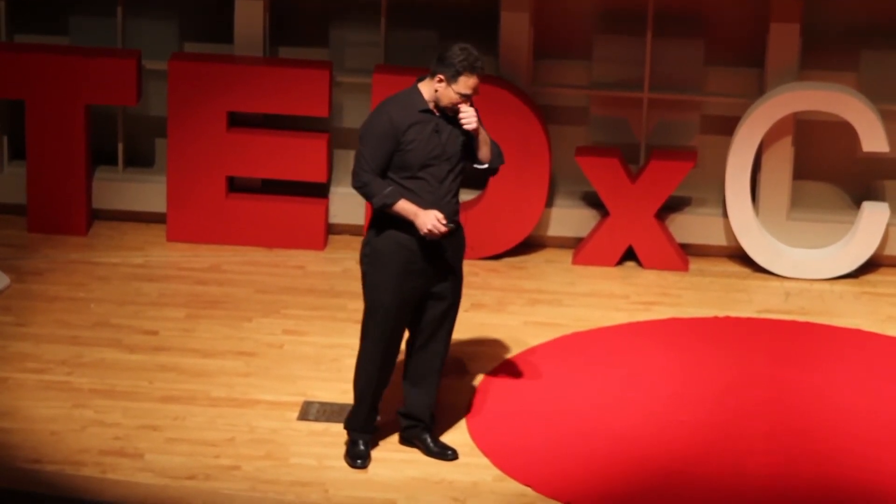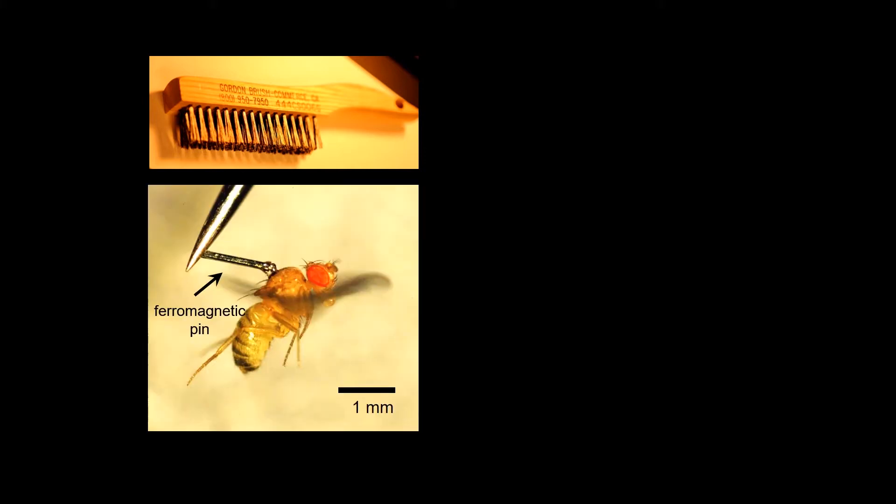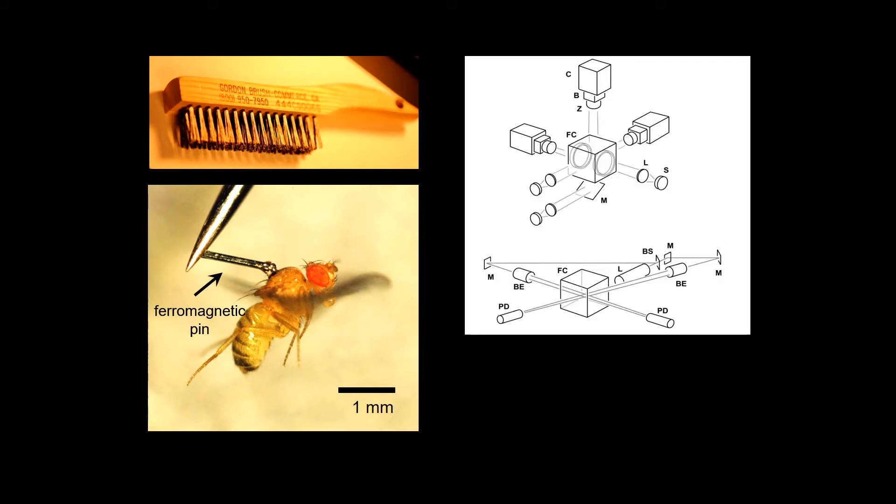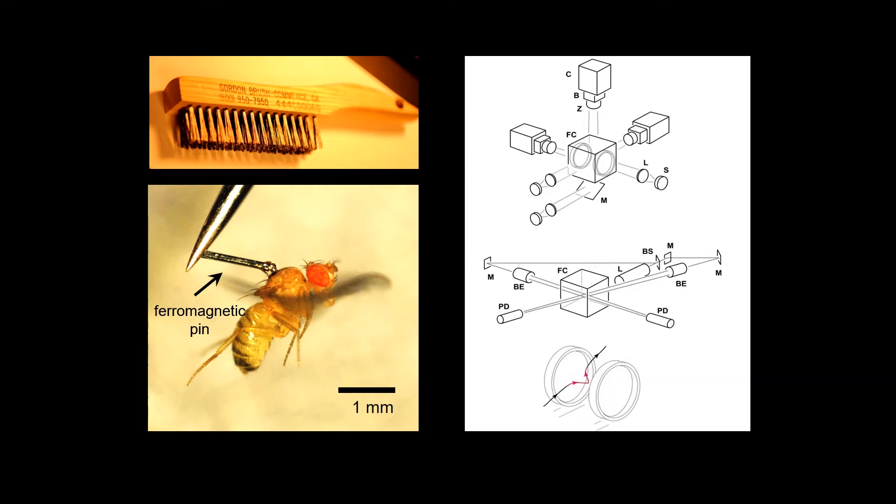To try and address this problem, I had a really creative student. And he noticed that if you take one of these brushes from the Gordon Brush Company, and you take a clipping of one of those bristles, those clippings end up being magnetic. And so, he took that little clipping and he glued it to the back of the fly. You see the fly is still flapping its wings, no problem. And then he puts it into our apparatus. We have our three video cameras recording the fly in fast motion. We then have a laser trigger that tells the cameras when to record.